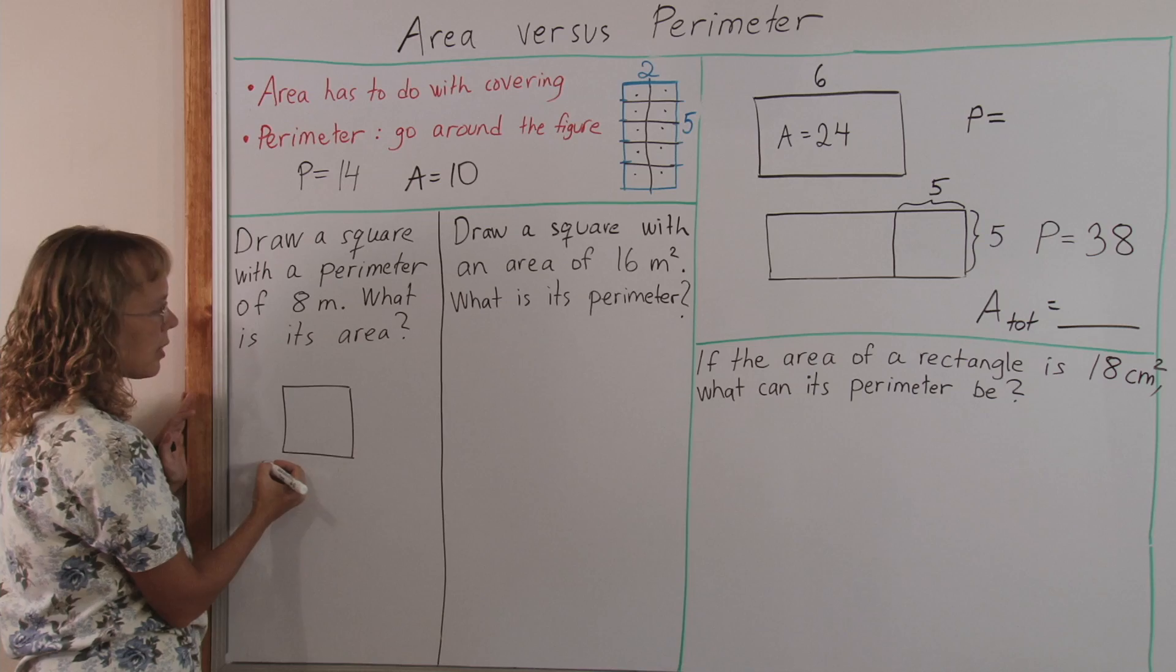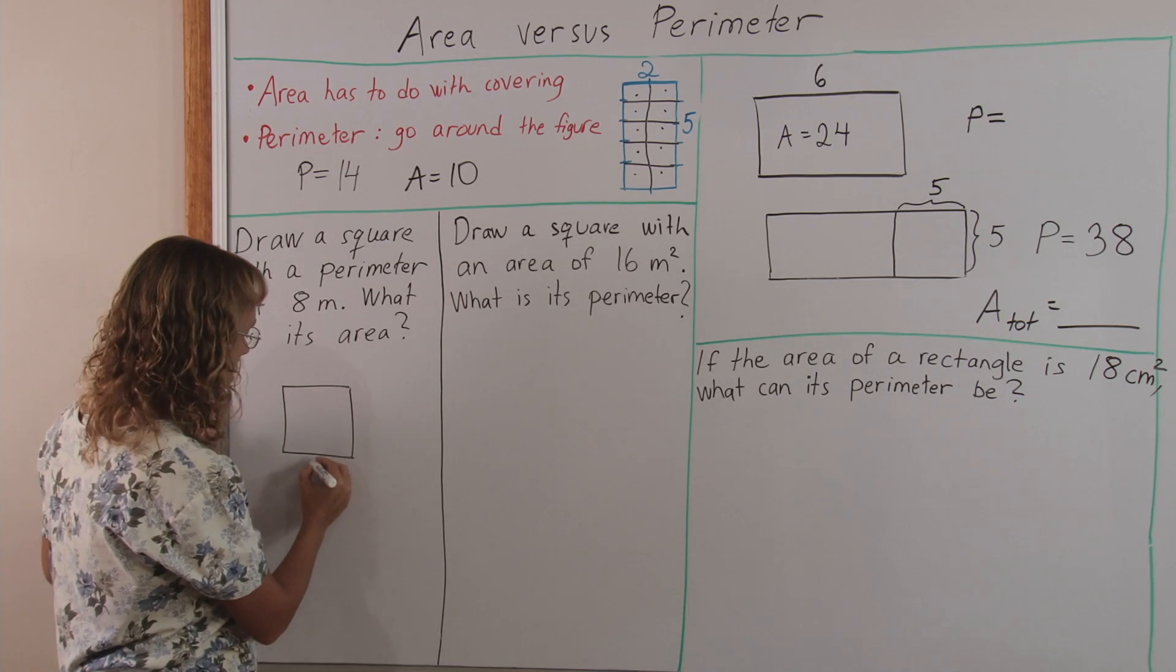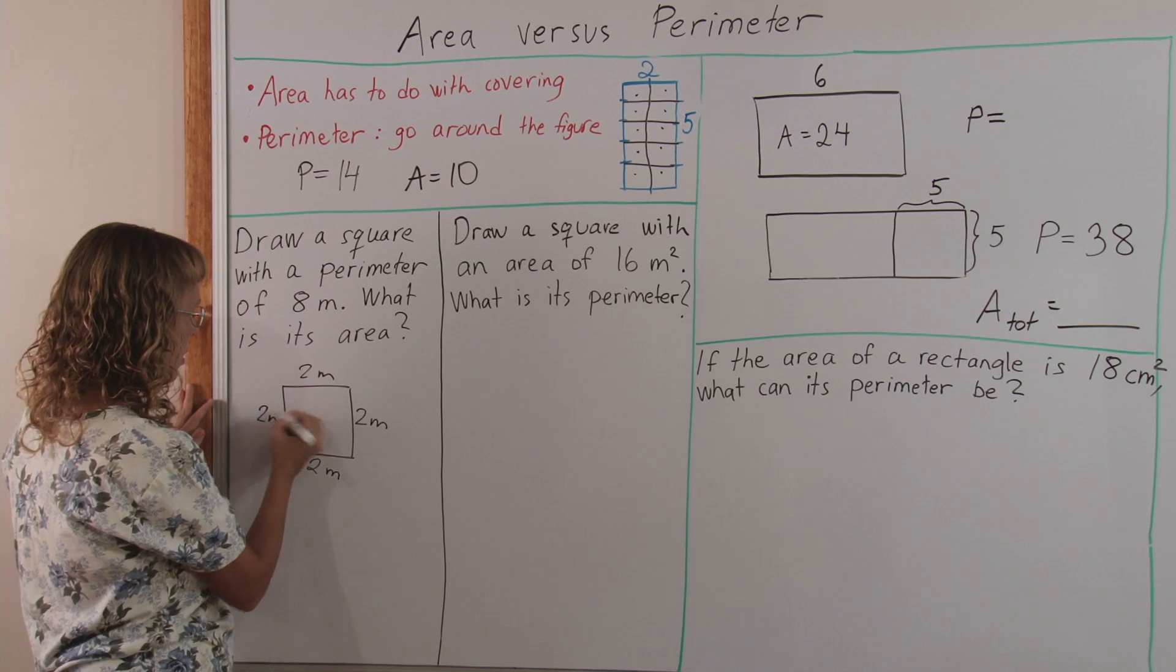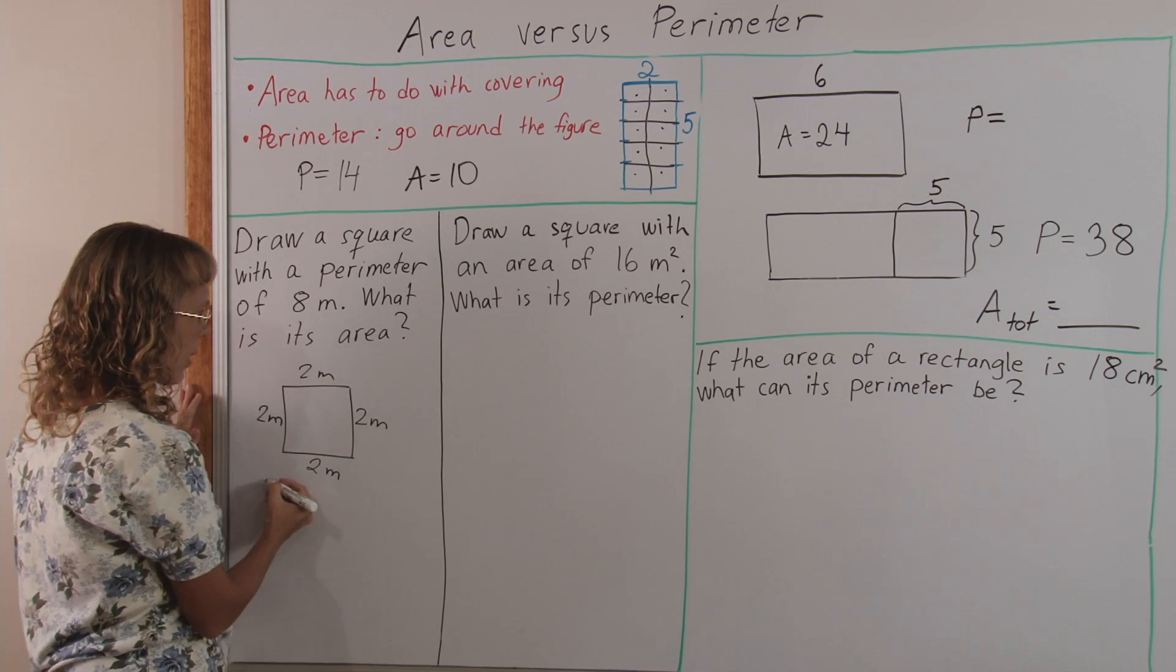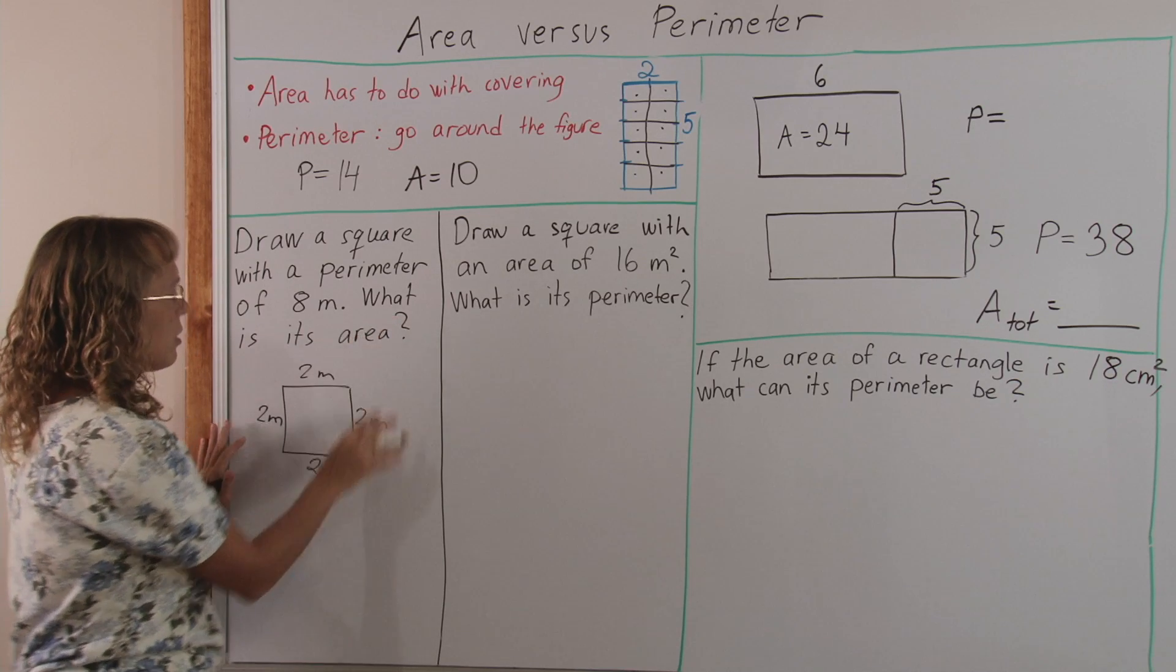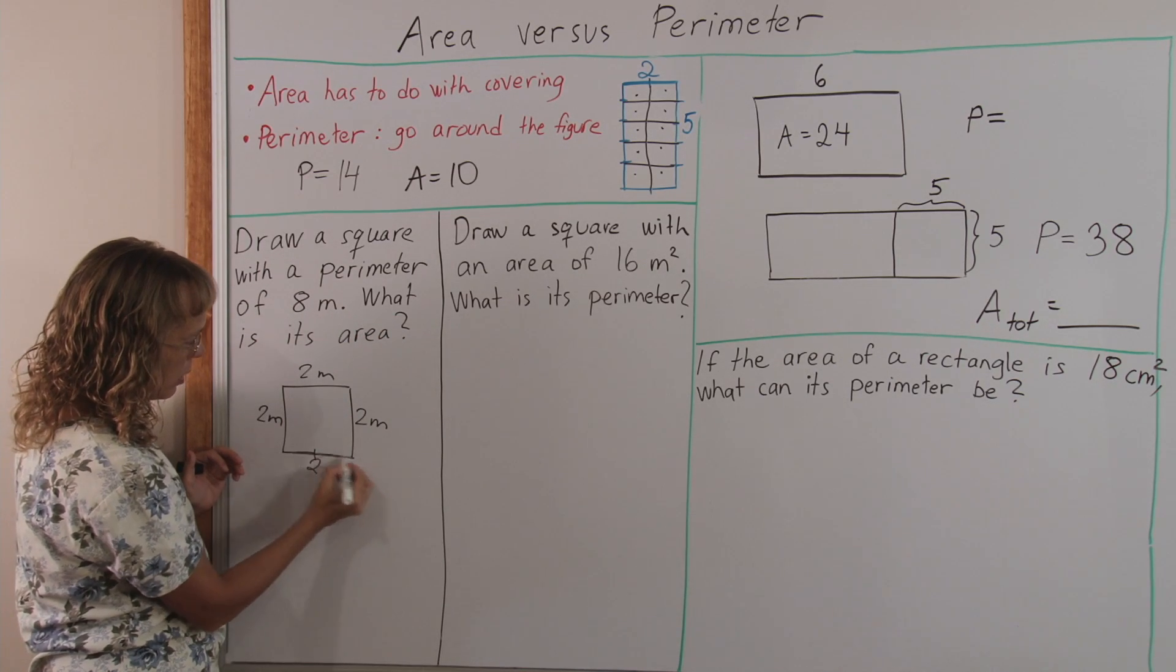Therefore there's four sides, each side has to be two meters long, right? So that I get eight meters in total when I go around. And now the area is solved by multiplication. If here's two meters...